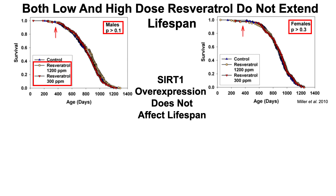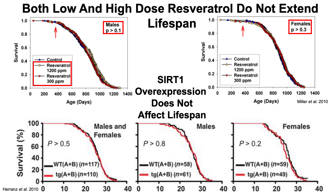Similarly, SIRT1 overexpression has been shown to not affect lifespan in other studies. Looking at survival percentage on the y-axis plotted against time in months, with two separate lines of SIRT1 overexpressing transgenic mice (line A and B), combined data for males and females, males alone, and females alone all showed that SIRT1 overexpression did not extend lifespan.